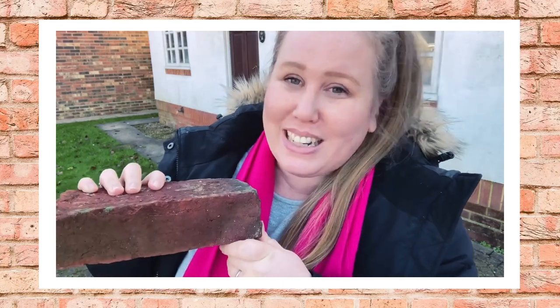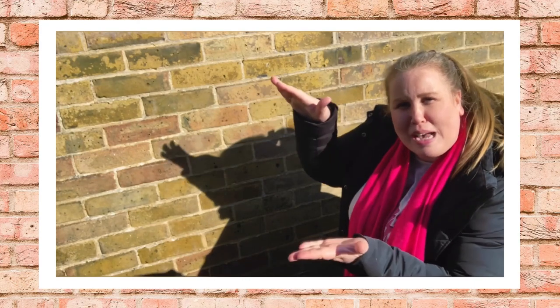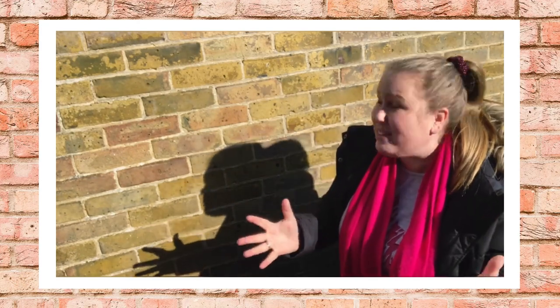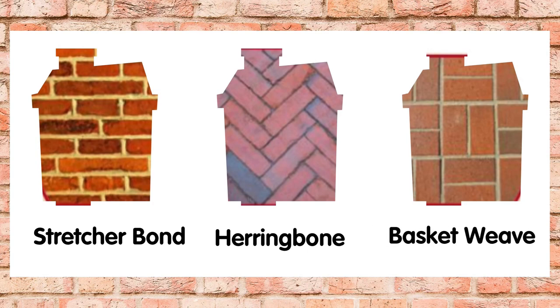In the UK, walls are usually built from bricks. Bricks are made from clay — they're shaped into rectangular blocks and then baked to make them hard. Some bricks can be really big, and they can be lots of different colours. They're all held together by cement, which sandwiches the bricks together. But did you know that some brick patterns are stronger than others? Here are three different brick patterns: stretcher bond, herringbone, and basket weave.